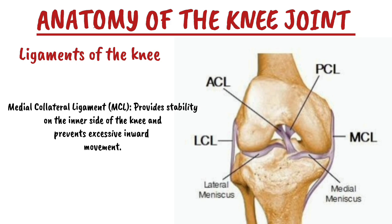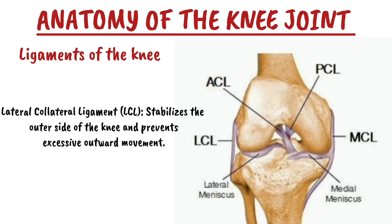Number three is the medial collateral ligament, also called the MCL. It provides stability for the inner side of the knee and prevents excessive inward movement. Number four is the lateral collateral ligament, which is the LCL. It stabilizes the outer side of the knee and prevents excessive outward movement.